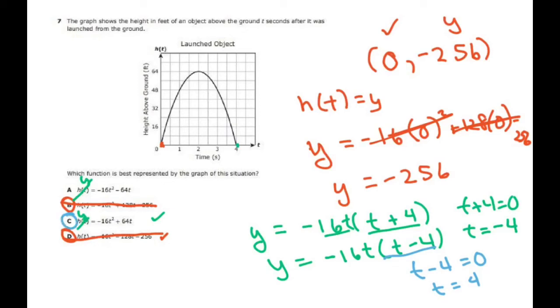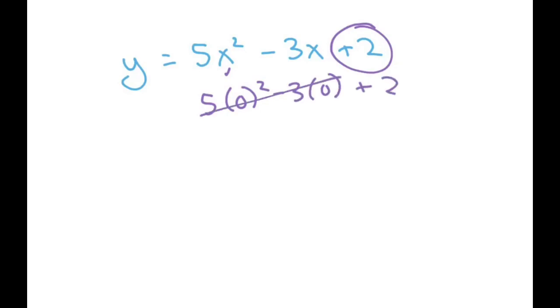But again, since you get to use the calculator, what you want to do is try to eliminate the ones that don't work, mainly because anytime you have something like y equals 5x squared minus 3x plus 2, your y-intercept is always this last number, because when you plug in zeros in here, this cancels out and you get y equals 2. That helps you eliminate the problems. Thank you, have a nice day, bye-bye.